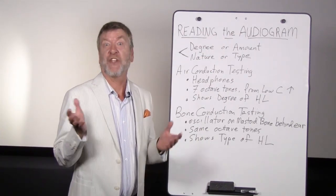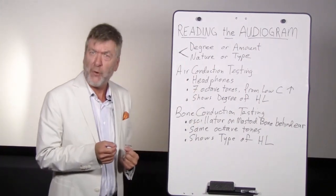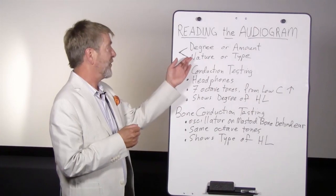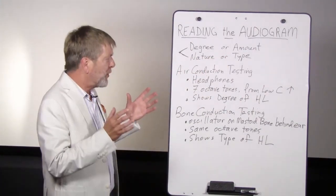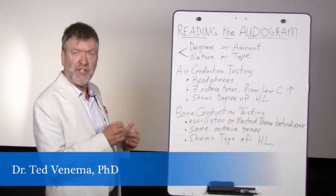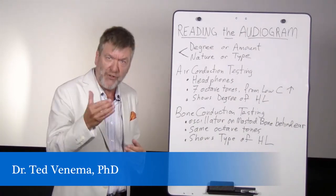The audiogram is known as the hearing test. On the hearing test two things are shown: the degree or amount of hearing loss as well as the nature or the type of one's hearing loss. An audiogram shows results done by air conduction testing and by bone conduction testing. I'll explain each of these.